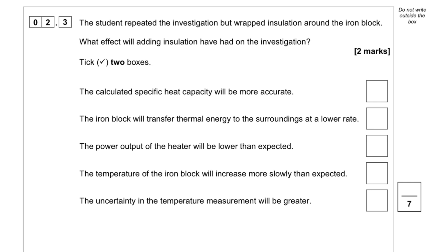Well, it will definitely have effect on the calculation of the specific heat capacity. It will be more accurate. So that will be true. And the second bit here, the iron block would transfer thermal energy to the surrounding at a lower rate. Yes, because that's what the insulator does to reduce heat loss.